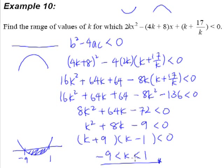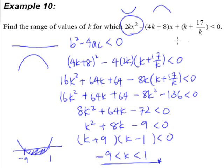First thing first, what we must realize is that our k cannot be zero. Why can't our k be zero? Because if our k is zero, we won't have a quadratic equation — this expression won't even be a quadratic expression. If our k is zero, we won't have an x² term and we will just have a linear expression, a straight line — a linear inequality. And for any linear inequality, it will never be always negative.